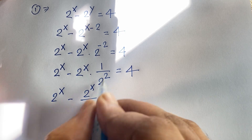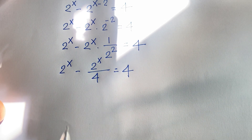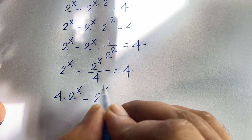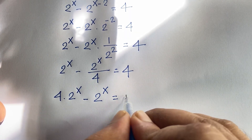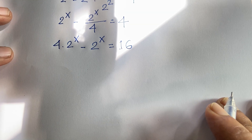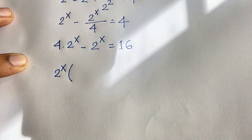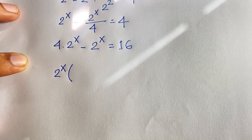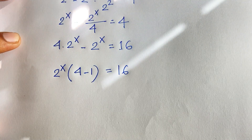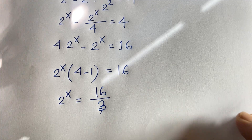Multiplying both sides by 4, we get 4 times 2 to the power x minus 2 to the power x equals 16, since 4 times 4 equals 16. Now 2 to the power x is common, so I factor it out: 2 to the power x times (4 minus 1) equals 16. Therefore 2 to the power x times 3 equals 16, giving us 2 to the power x equals 16 over 3.